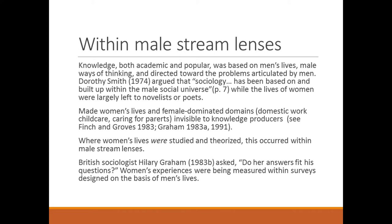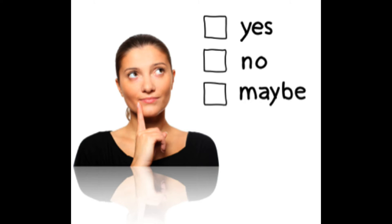Knowledge — both academic and popular — was based on men's lives, male ways of thinking, and directed toward problems articulated by men. Dorothy Smith argued in 1974 that sociology had been based on and built up within the male social universe, while the lives of women were largely left to novelists or poets. This made women's lives and female-dominated areas — such as domestic work, childcare, and caring for parents — entirely invisible to knowledge producers. When women's lives were studied, it occurred within that male-stream lens. British sociologist Hilary Graham asked: do her answers fit his questions? Women's experiences were being measured within surveys designed on the basis of men's lives. This was a bias that needed to be pointed out and rectified.